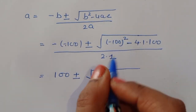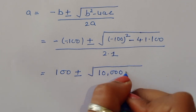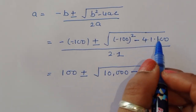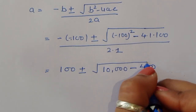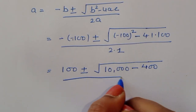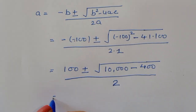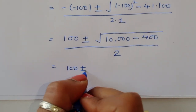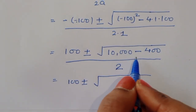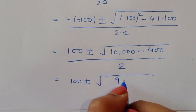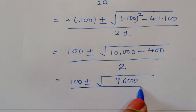This simplifies to 100 plus or minus the square root of 10,000 minus 400, all divided by 2. Subtracting inside the square root gives us 9,600, so we have 100 plus or minus the square root of 9,600, divided by 2.